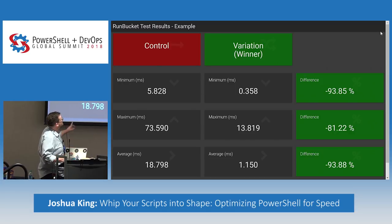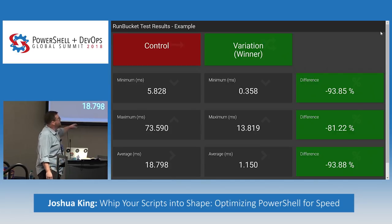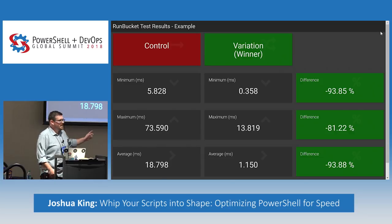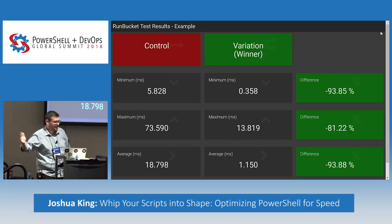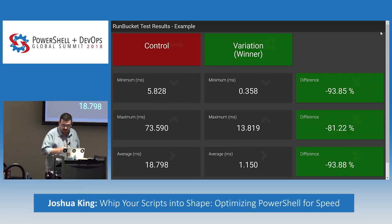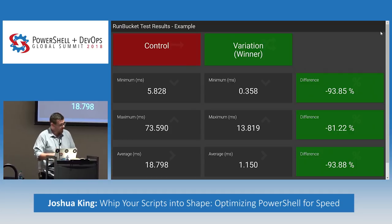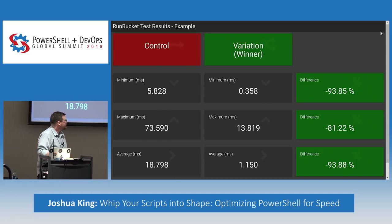What I'm using to determine the winner is the average, because we've got all sorts of random occurrences that could get in the way. The maximum might be high, but the overall average is still low. A minus in the percentage means it was, say, 80% quicker.